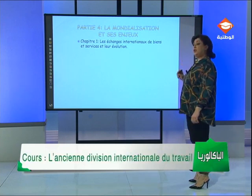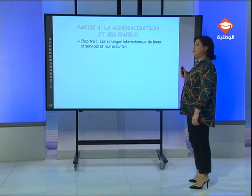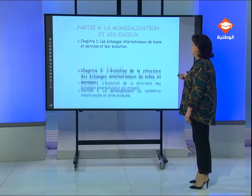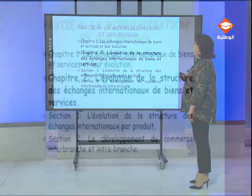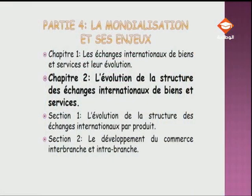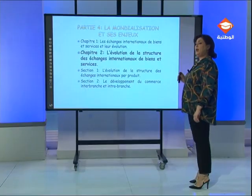Vous avez déjà vu dans une séance précédente le contenu du premier chapitre : les échanges internationaux de biens et services et leur évolution. On est ensuite passé au chapitre 2, l'évolution de la structure des échanges internationaux de biens et services. Deux sections ont déjà été effectuées : la première concernant l'évolution par produit, et la séance dernière, on a vu le développement du commerce interbranche et intrabranche.